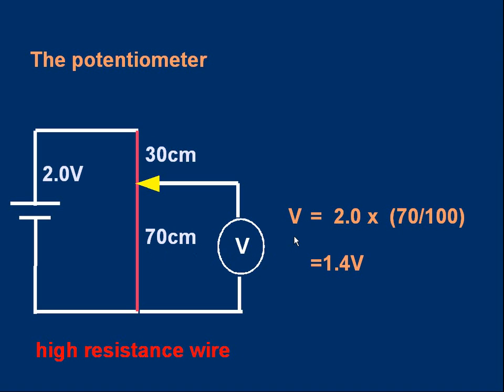The voltmeter reading will be the full voltage across the wire, which is 2, times the fraction giving the proportion that's applied to the 70 centimeter length. That fraction is simply 70 over 100 because the total is 100. 70 over 100 is the fraction. Two times it gives 1.4 volts.